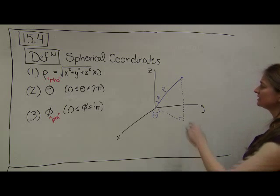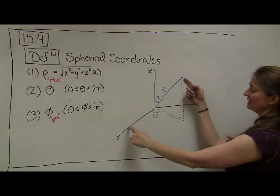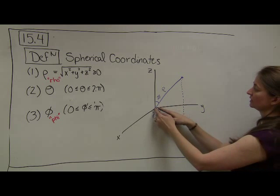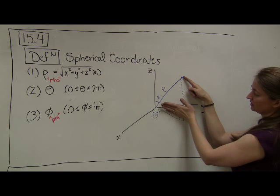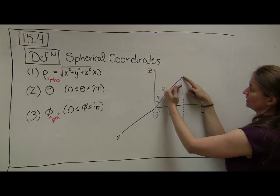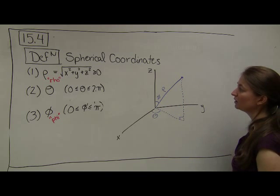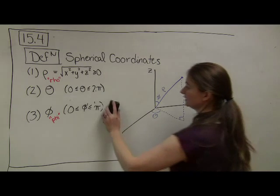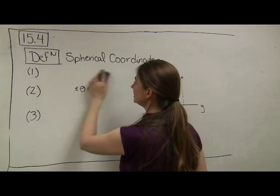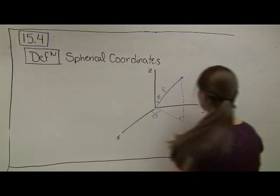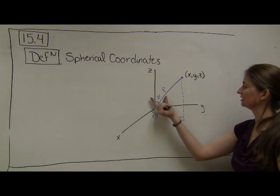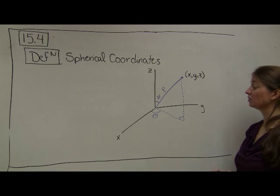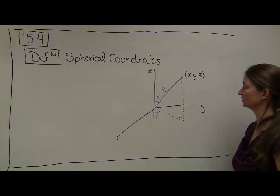In general, this is how we describe points in space. Instead of moving in an x-direction, y-direction, and z-direction, we say: how far out from the origin are we traveling? What angle are we making with the x-axis? And what angle are we making with the z-axis? If I have a point labeled as x, y, z, I'm going to need to use triangle geometry in order to convert it into rho, phi, and theta.